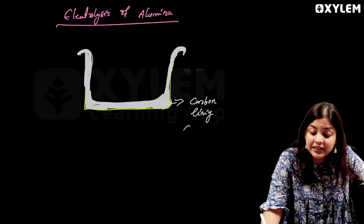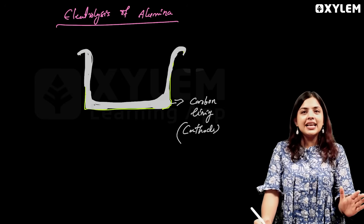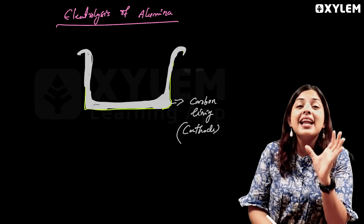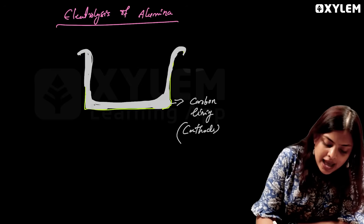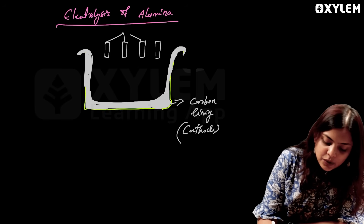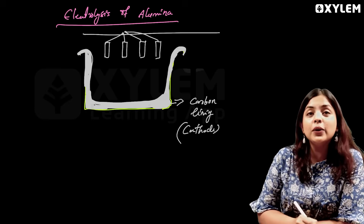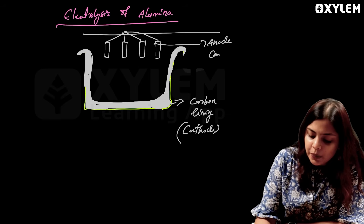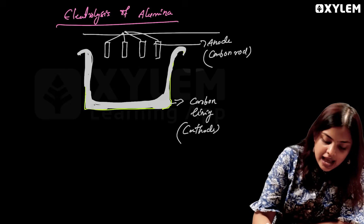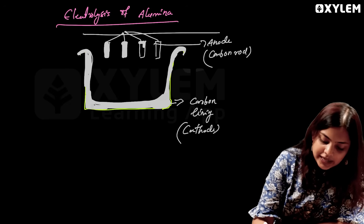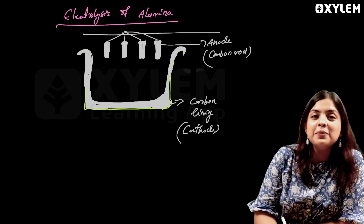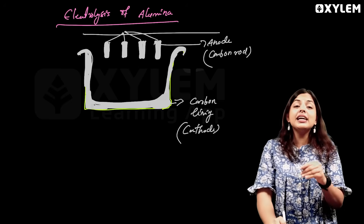The carbon lining acts as the cathode. For electrolysis, we have the anode and the cathode. The carbon lining is the cathode. Carbon rods are used as the anode. The carbon road connects to the anode, and carbon lining forms the cathode.